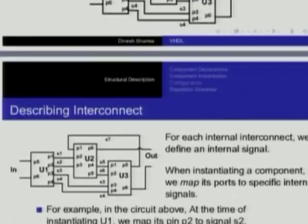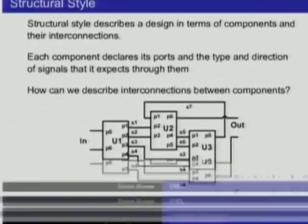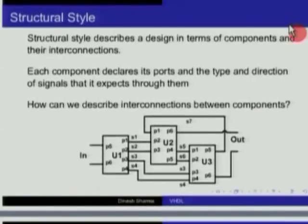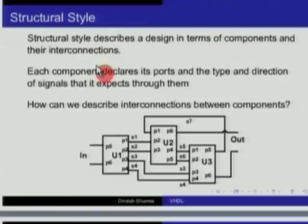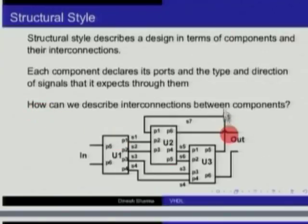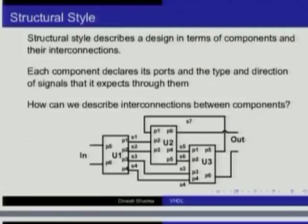Structural style describes the design in terms of components and their interconnection. Each component declares its ports and the type and direction of signals that it expects through those ports. Here is a circuit which is described structurally — we see various components and their interconnection. How do we put it down in VHDL?